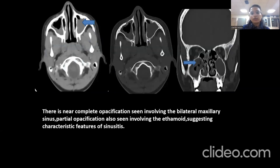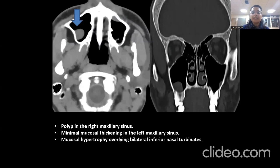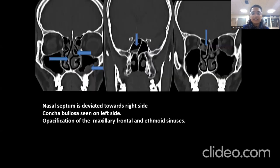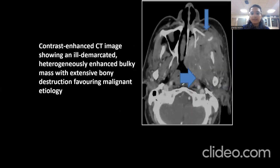These axial and coronal images of the PNS show near-complete opacification involving bilateral maxillary sinuses, with partial opacification involving the ethmoid, suggesting a characteristic feature of sinusitis. Another image shows a polyp in the right maxillary sinus with minimal mucosal thickening in the left maxillary sinus and mucosal hypertrophy over bilateral inferior nasal turbinates. One image shows a deviated nasal septum towards the right side and concha bullosa on the left middle turbinate, with opacification of the frontal sinus and ethmoid sinus in subsequent images. A contrast-enhanced CT image shows an ill-demarcated, heterogeneously enhancing bulky mass with extensive bony destruction, favoring a malignant etiology.